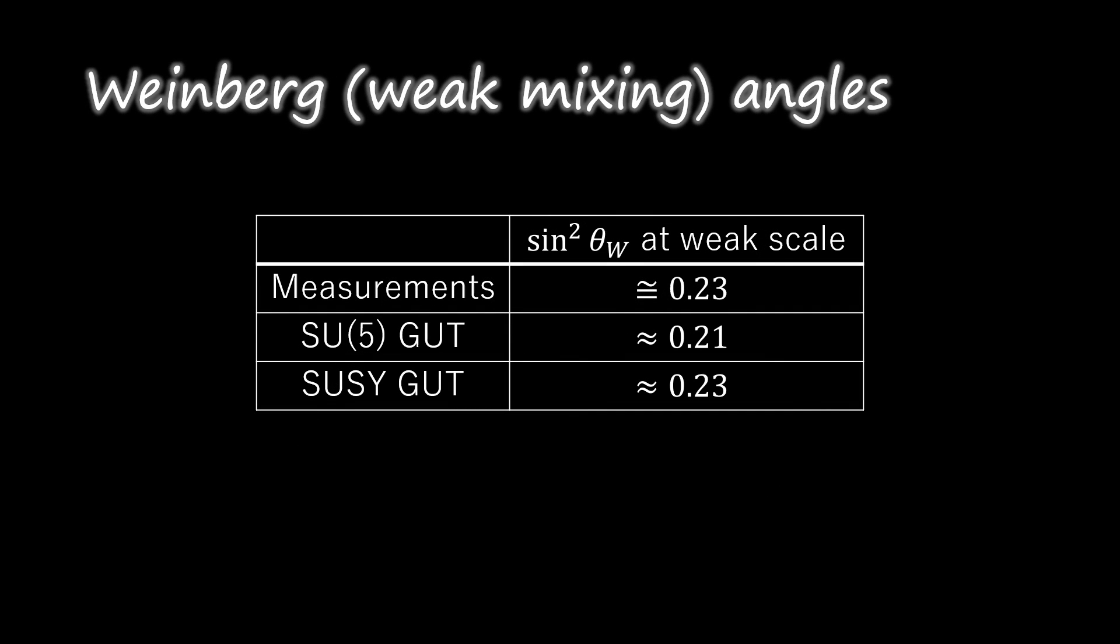The prediction is a strong constraint on possible GUTs. By 1982, the calculations had been performed for a supersymmetric SU5 GUT, giving a value of 0.23. With the precision measurements at LEP, the experimental value moved to the supersymmetric GUT value, to within the measured accuracy of 1% of the value.